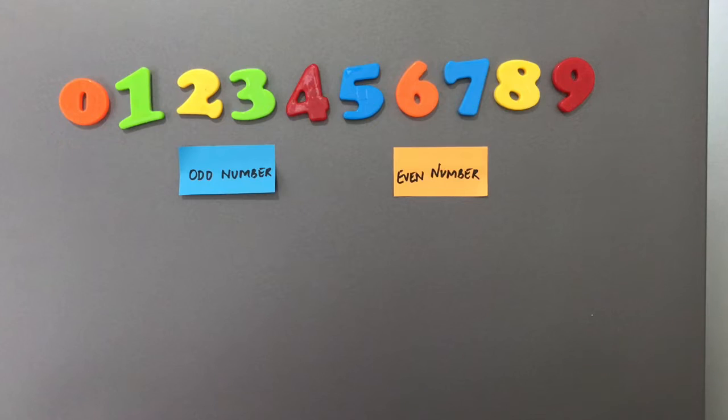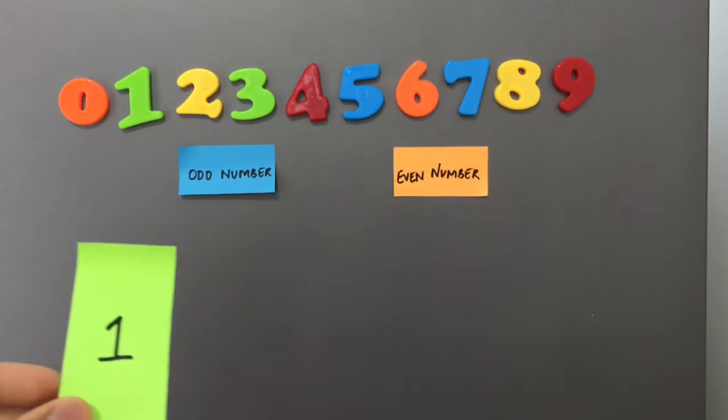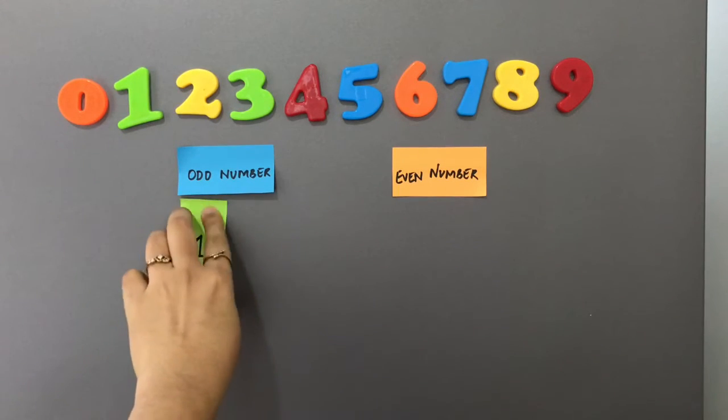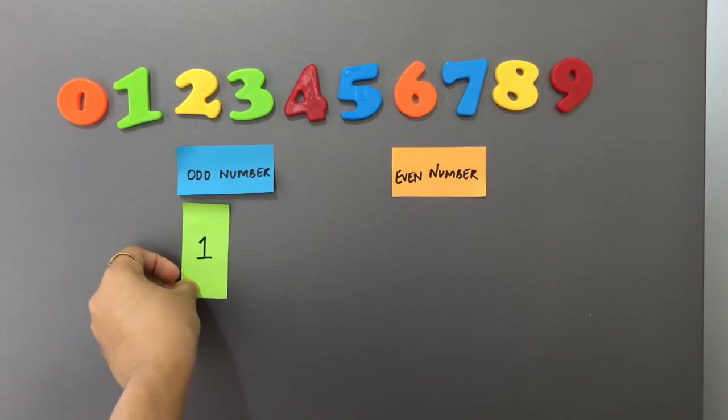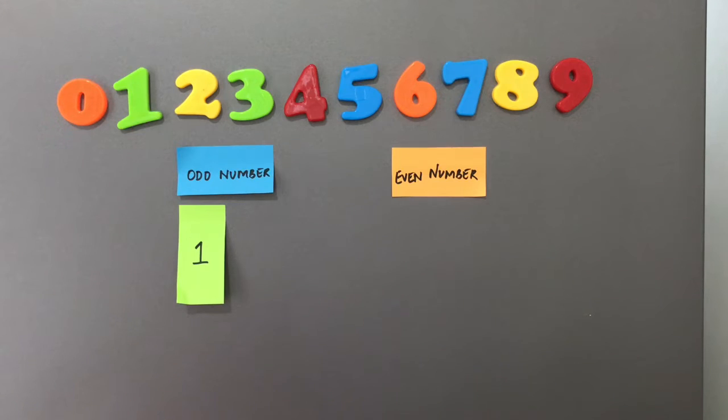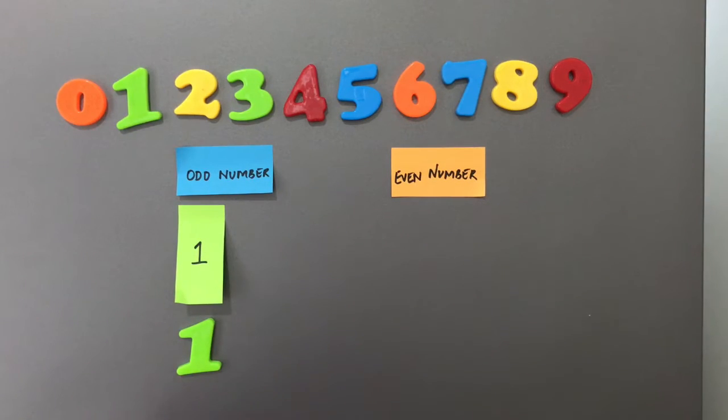You can either use magnetic numbers or out here I am basically making use of post-its on which I have written the number. So the child simply puts number one in the category of odd numbers. Or the child can go ahead and even put magnetic numbers. Either manipulative works.